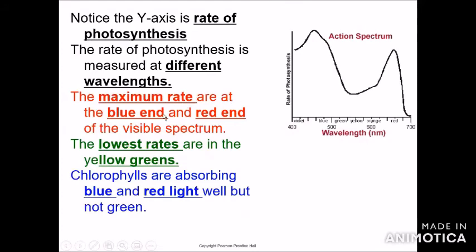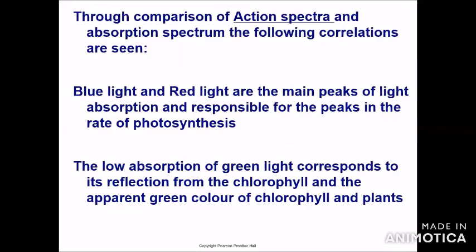The maximum rate of photosynthesis occurs at the blue and red ends of the visible spectrum; the lowest rates are in the yellow-green range. Chlorophylls absorb blue and red light well, but not yellow and green. Through comparison of action spectra and absorption spectrum, the following correlations are seen: blue light and red light are the main peaks of light absorption and are responsible for the peaks in the rate of photosynthesis. The low absorption of green light corresponds to its reflection from chlorophyll, explaining the apparent green color of plants.